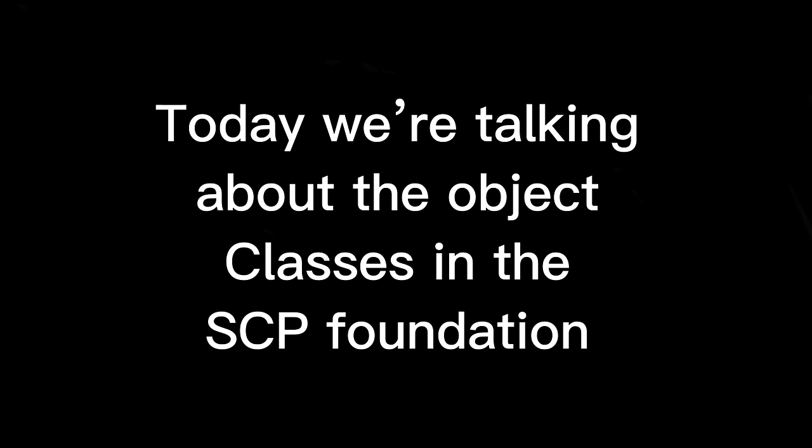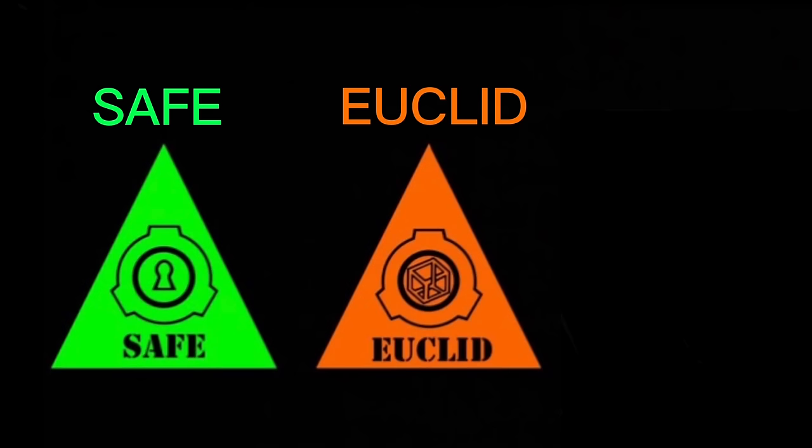Welcome back everyone. Today we're talking about the object classes in the SCP Foundation. There are mainly three object classes many have seen: Safe, Euclid, and Keter.